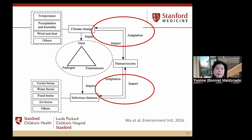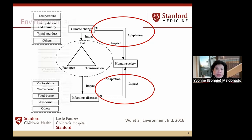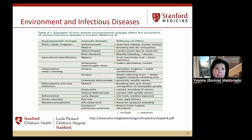As a pediatric infectious disease epidemiologist, we look at disease prediction — where diseases might come from, how we can mitigate them. When you look at climate change at the top of this model, you see a number of climate-related variables and a bidirectional relationship with human society, as well as the impact on infectious diseases. Central to that is the relationship between the human host, the organism, and the transmission factors, including the environment. This is just an example from the World Health Organization of ways that climate change has already impacted diseases in different parts of the world.